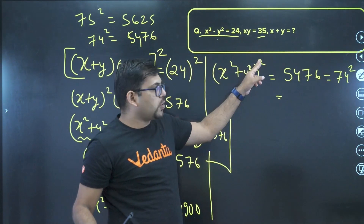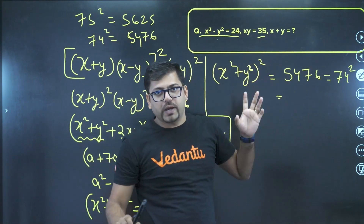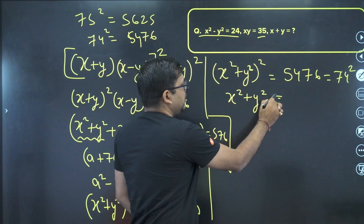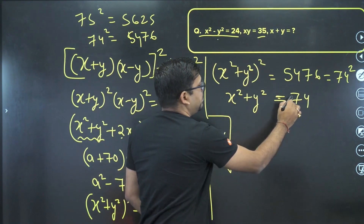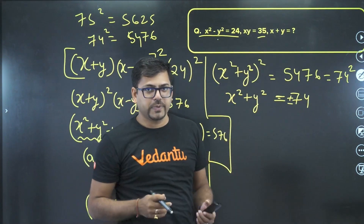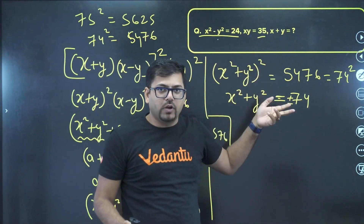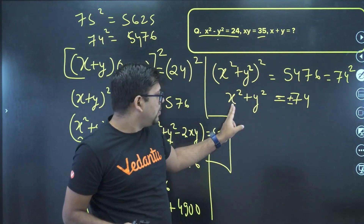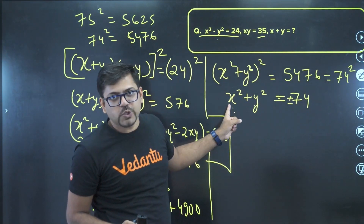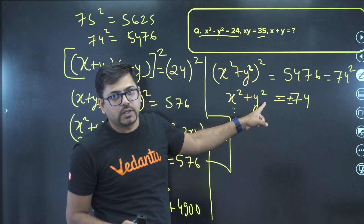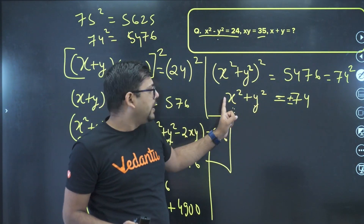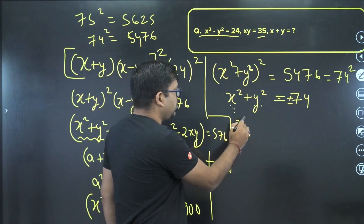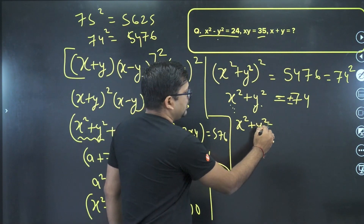So we can write x²+y² equals ±74. Why plus-minus? Because when we cancel the squares we always put ±. However, the negative value is not taken here because both terms x² and y² are squares — they are positive — and positive plus positive cannot be negative. So x²+y² equals 74.